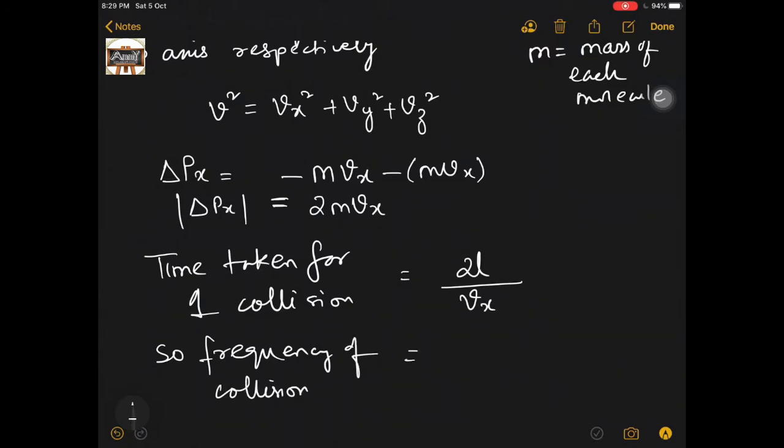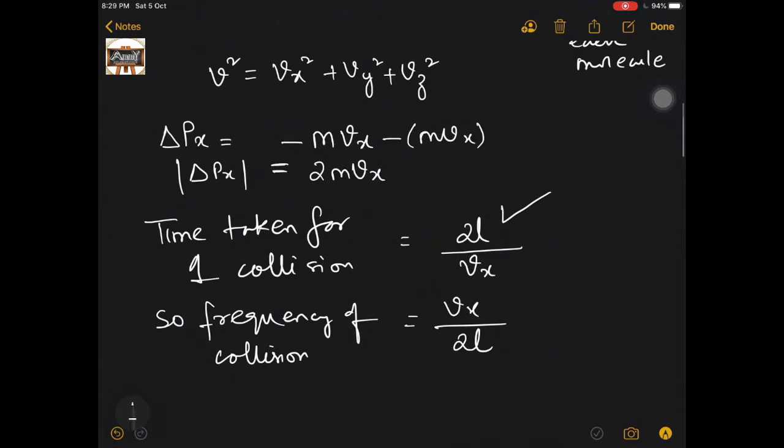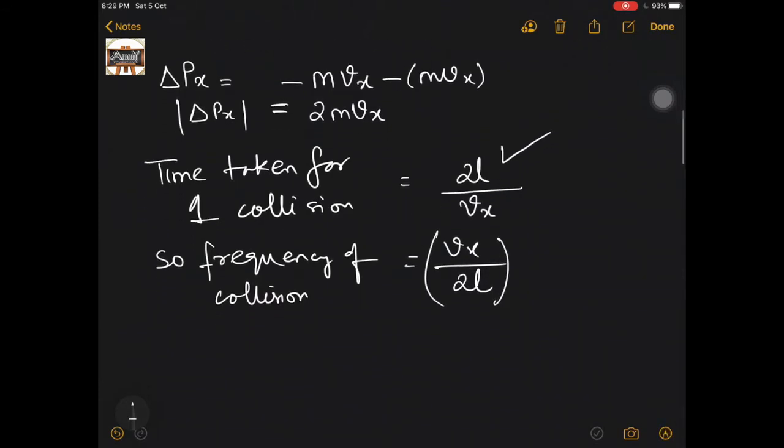The frequency of collision is going to be the reciprocal. Frequency is the reciprocal of time. So if 2L/Vx is the time for one collision, then number of collisions taking place per second is Vx/2L.